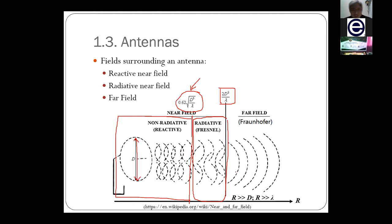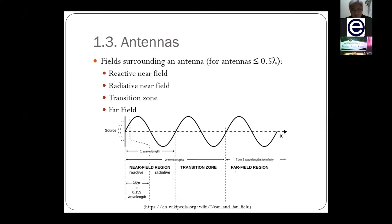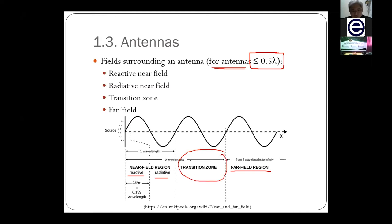For antennas smaller than 0.5λ (half the wavelength), we also have reactive near field, radiative near field, and far field — but unlike typical antennas, small antennas also have a transition zone between near field and far field where the two overlap. This is specifically applicable only to very small antennas with a length shorter than half the wavelength.